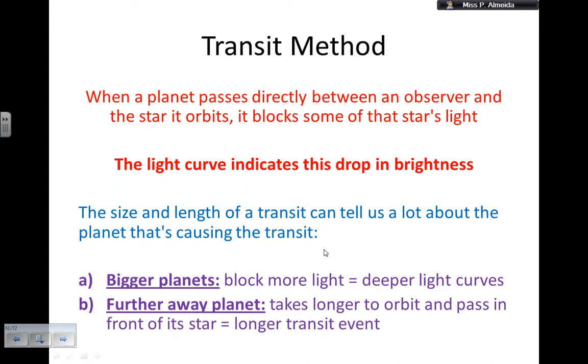When a planet passes directly between an observer and the star it orbits, it blocks some of the star's light. So the light curve indicates this by dropping in brightness, okay? The luminosity of the star is the same. It still emits the same amount of energy per second. However, the brightness that I receive here on Earth changes, decreases when the planet is blocking the light. The size and the length of a transit event can tell us a lot about the planet that is causing the transit. For example, bigger planets, they block more light. So the light curve is a little bit deeper. For the ray planets, they take longer to orbit and pass in front of the star. So the longer the transit event, you get a lot of information just by looking at the light curves.